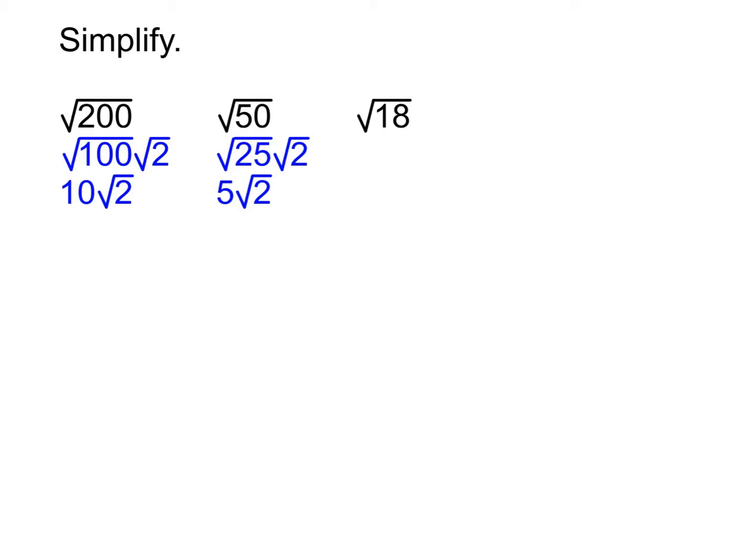Then on to the root 18. Same question to start with. What's the biggest perfect square that goes into it? 9. So it ends up being 9 times 2 to get the 18. Square root of 9 ends up being 3, so we get 3 root 2. Make sure you have each of those written down correctly, because it's going to be very useful here in a minute.